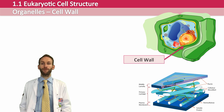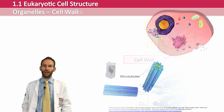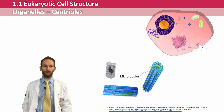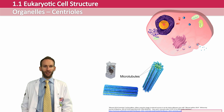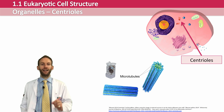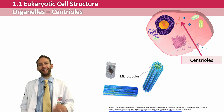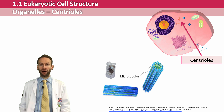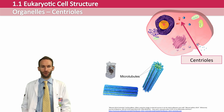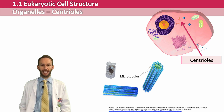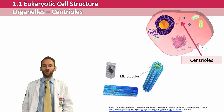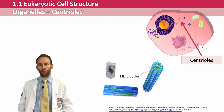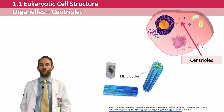Animal cells have centrioles, which are not found in plant cells, although plants have microtubule organising centres that carry out the same job. Centrioles are normally found in a pair right next to the nucleus, arranged at right angles to each other. Each one is a bundle of nine microtubules. They are used in cell division — they move to opposite ends of the cell and produce the microtubule spindle, which moves and pulls chromosomes apart during cell division.